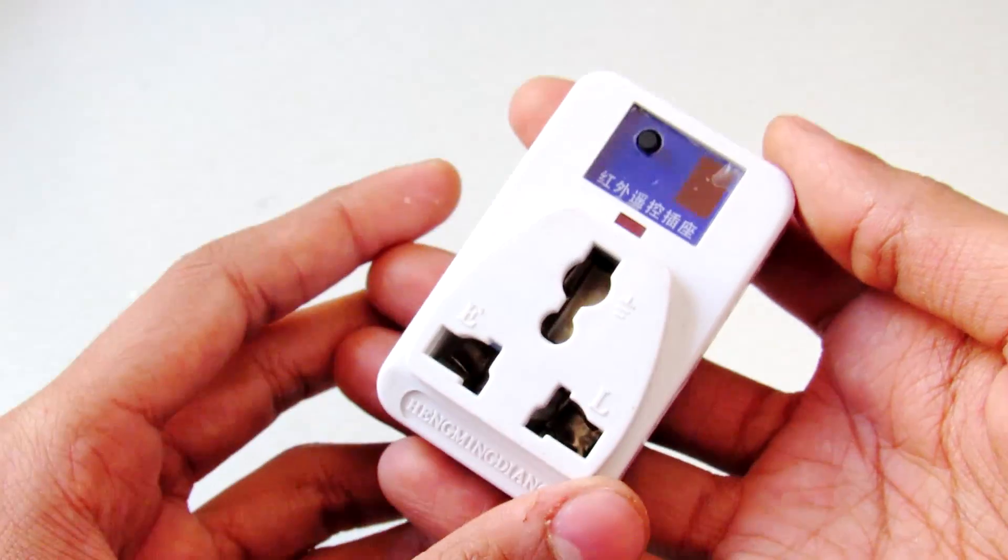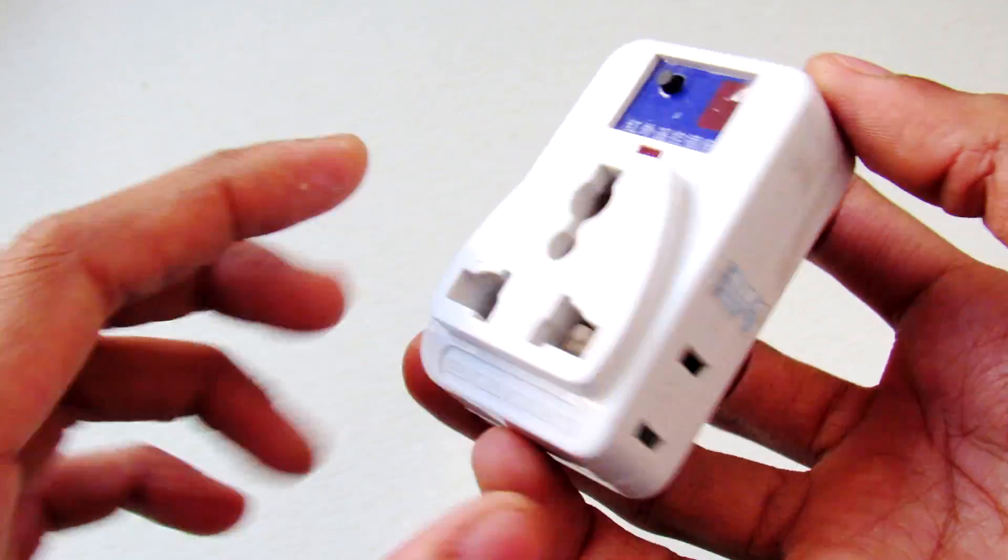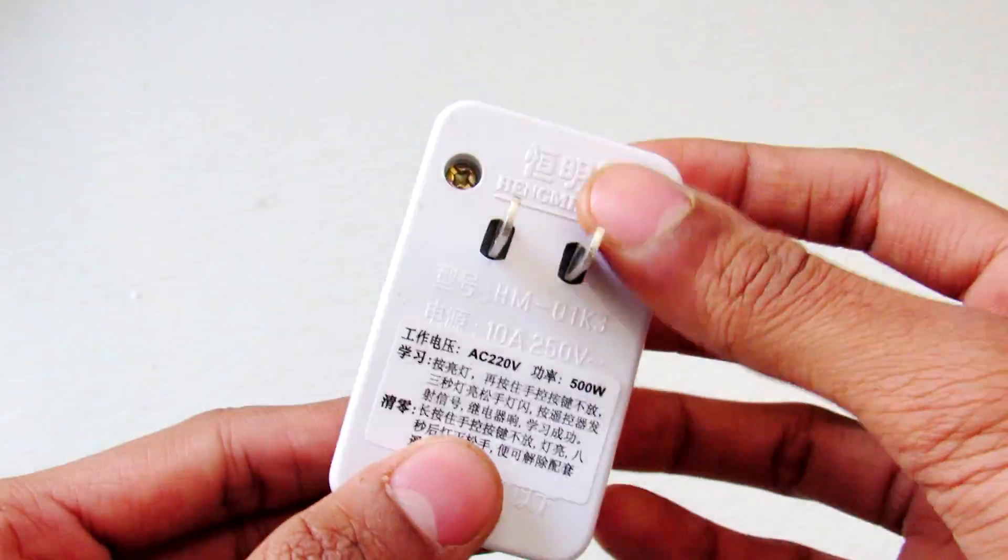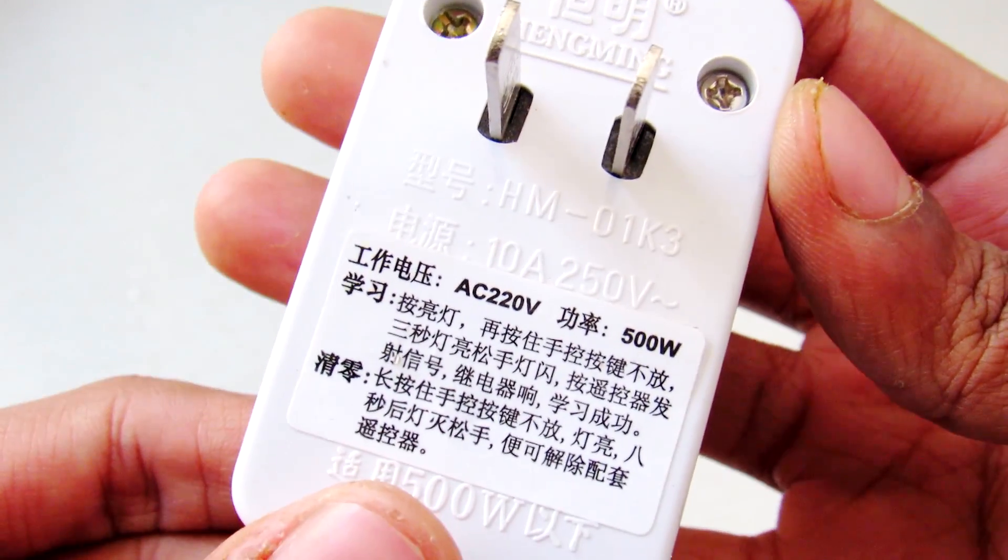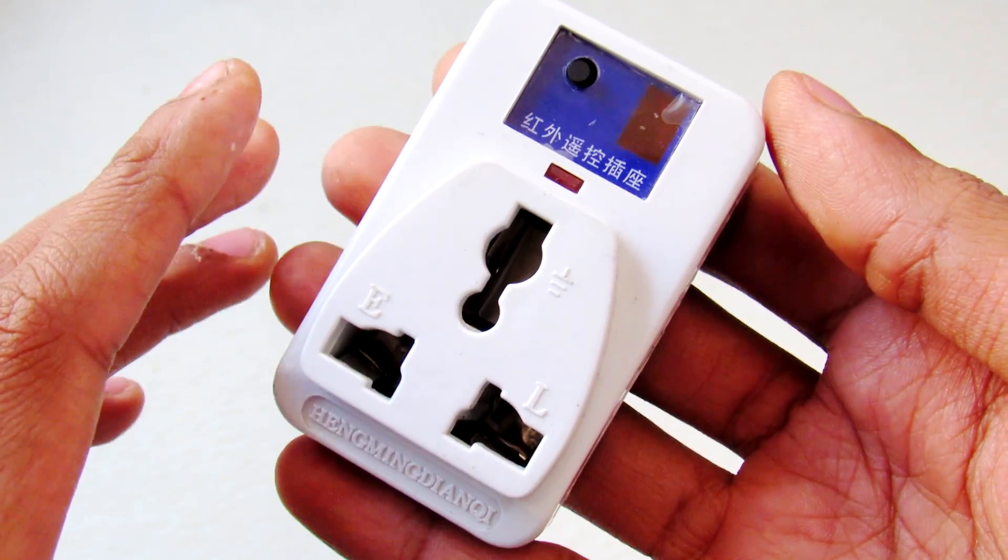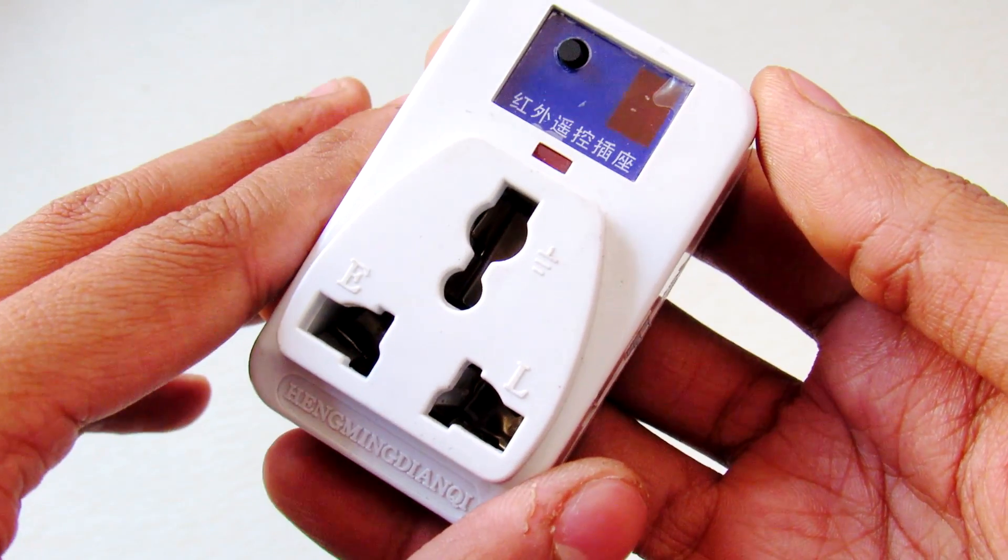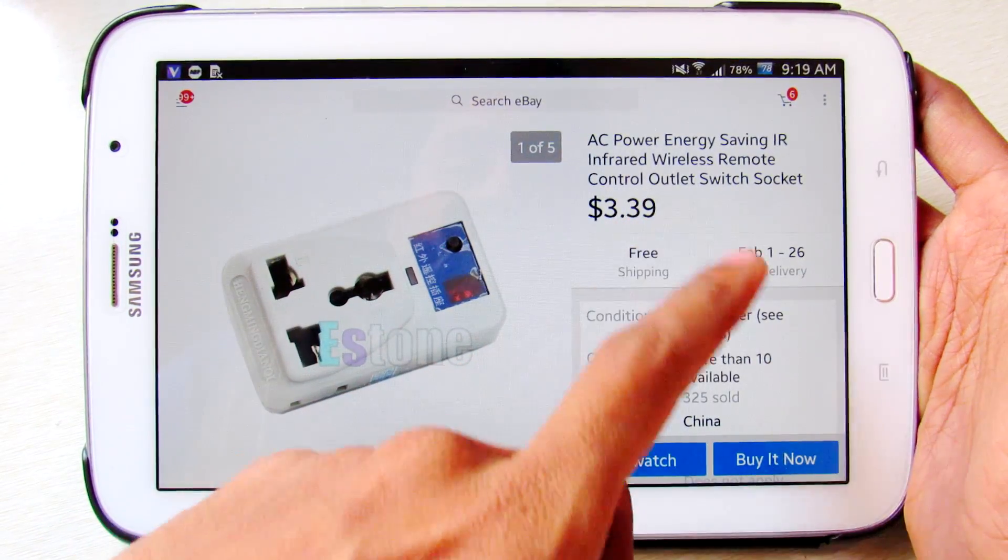Here is the IR switch. You can see the button to manually turn it on and off. Here is the output and here is the input. It is rated for 500 watt AC, 250 volts, and 10 amp. You can connect any appliance rated under 500 watt to it. Here is the listing for the AC IR switch for $3.39 pre-shipping.